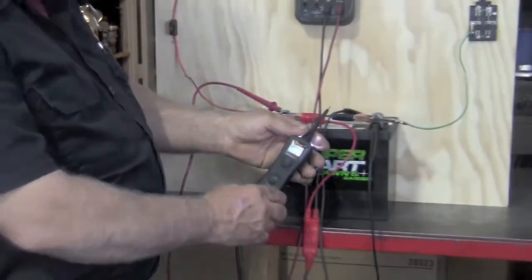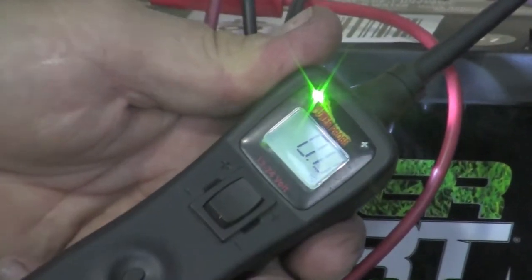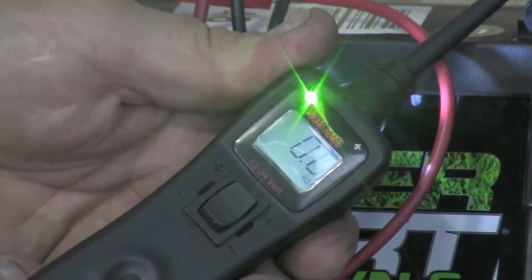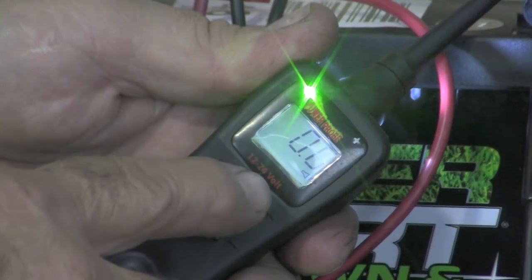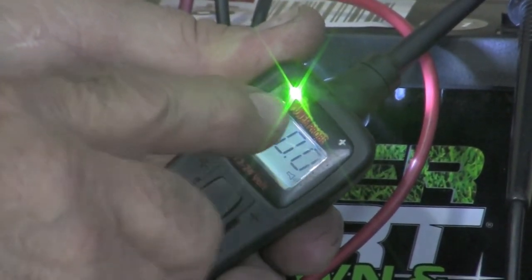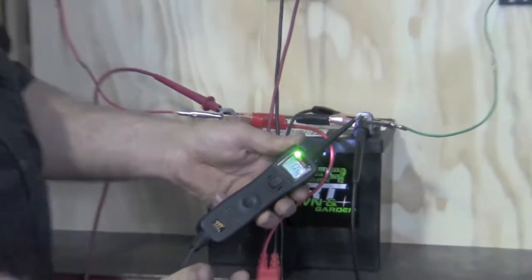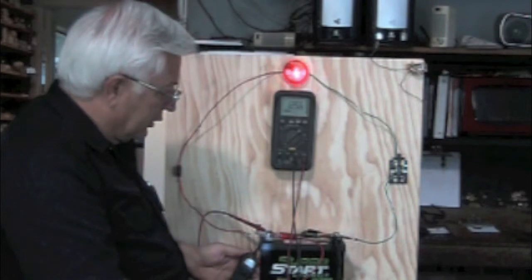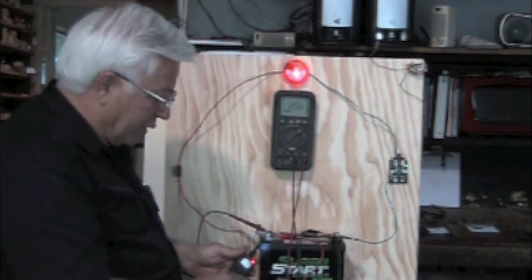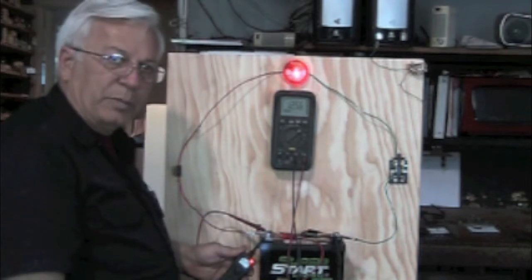Now we're going to go to the ground side. We'll touch the ground side. It's going to read zero volts. The green light shows up and the different sound for the ground side. Now if you're reading zero volts, you have a green light, and you have a clear sound, that means you have a good ground. Same thing on the power. You have a good sound, a red light, and you're reading 12 volts, you have a good power.